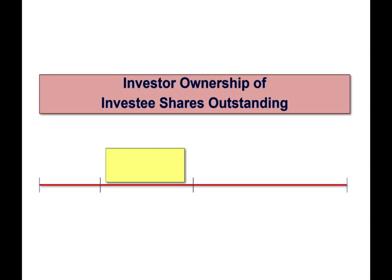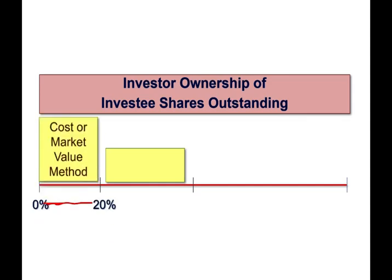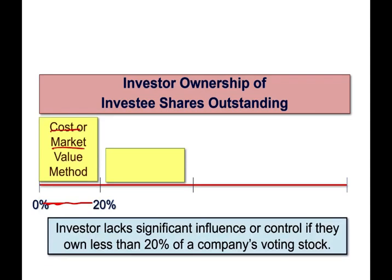When company A buys stocks in company B, it all depends on your ownership level. Do you own less than 20%? If you own less than 20%, we will use either the cost or the market value method, because here we are assuming you have insignificant influence — you lack significant influence. Simply put, you have no say in the company.